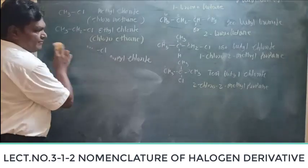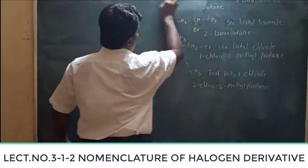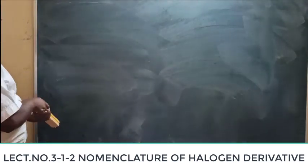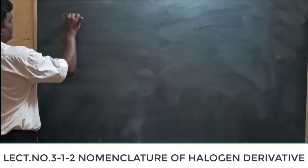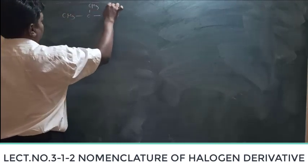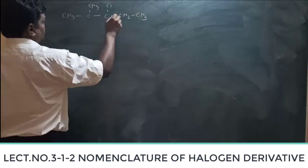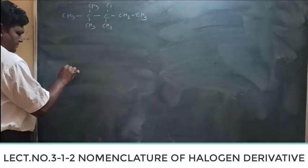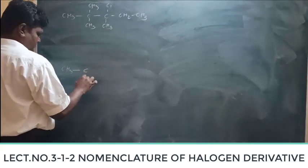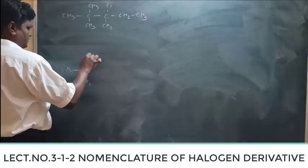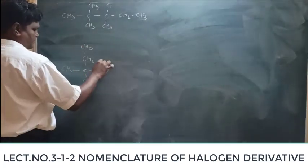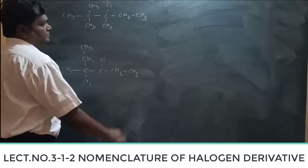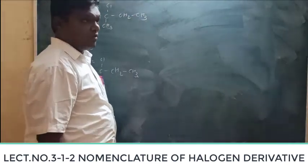We will see two to four examples of haloalkane IUPAC naming. Let's start with the examples. We have one-line structure also.